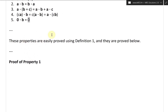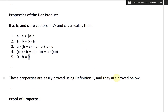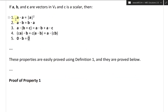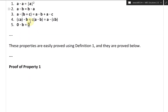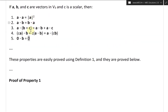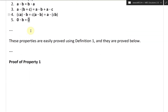These properties are easily proved using Definition 1, and they are proved below. So now let's take a look at the proof of Property 1 — that A dot A equals the length of A squared.